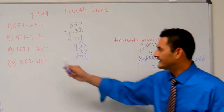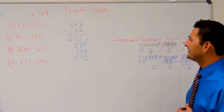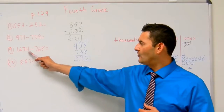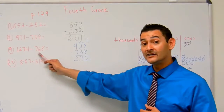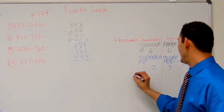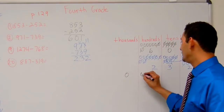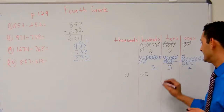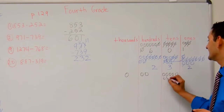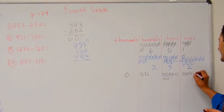Now let's take a look at the next sample. There I've got 1,274 minus 768. So let's draw this one out. I've got one thousand, two hundreds, seven tens — one through seven — and four ones — one, two, three, four.